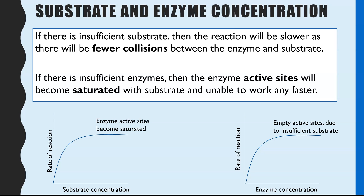Next is substrate and enzyme concentration and how these two variables affect the rate of reaction. They both have a very similar effect, to do with successful collisions between enzyme and substrate. At low substrate concentrations, there is a lower rate of reaction, showing a positive correlation up to a certain concentration. This indicates that at low concentrations, substrate concentration is the limiting factor — with insufficient substrate, there are fewer molecules available to collide with the enzyme, so you get fewer enzyme-substrate complexes.